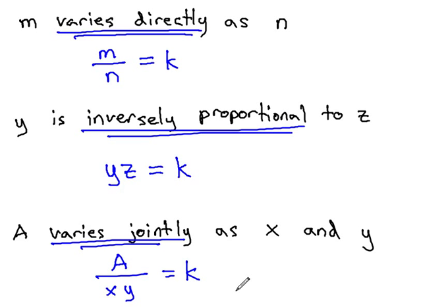By catching the key phrases in the problem that describe the relationship of the variables, we can quickly make an equation to model the situation. If we see varies directly, we divide the variables.